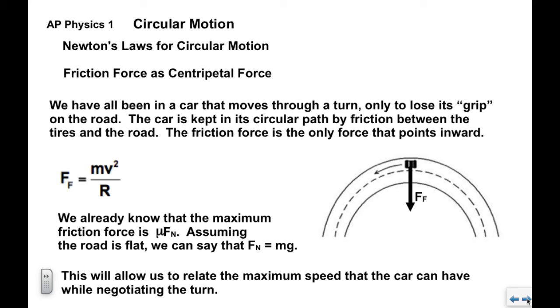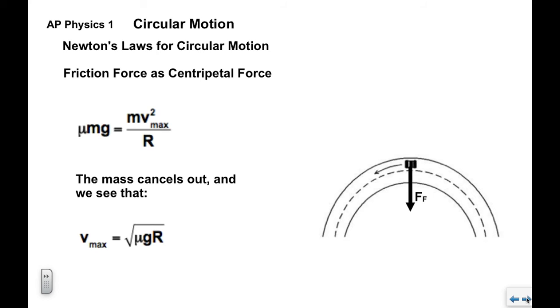What this allows us to do is relate the maximum speed that this car can go through the turn. That'll be associated with the maximum friction force. If the car goes any faster than that, the friction force is not available. What we would see is that mu times mg, which is our maximum friction force, we say it equals mv squared over r, where v is the maximum velocity that the car can have through the turn. The mass goes away and we rearrange. We see that the maximum velocity is the square root of mu times gr.